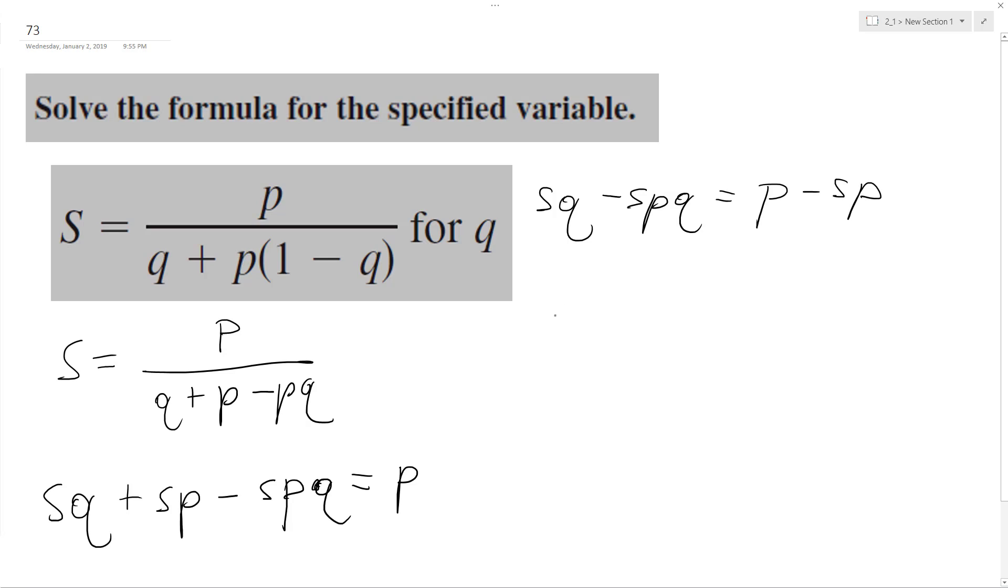I can factor Q out of the left side. So I have Q quantity S minus SP equals P minus SP.